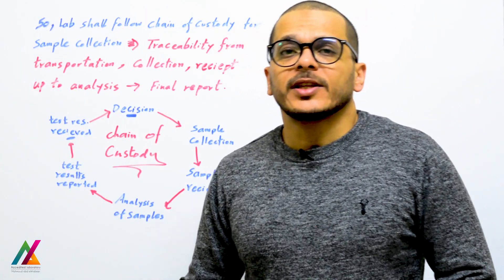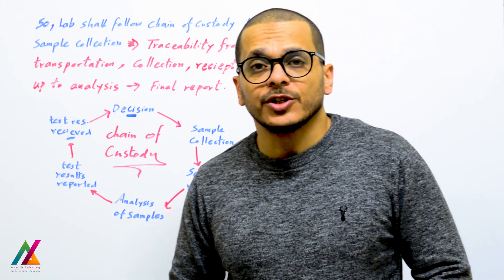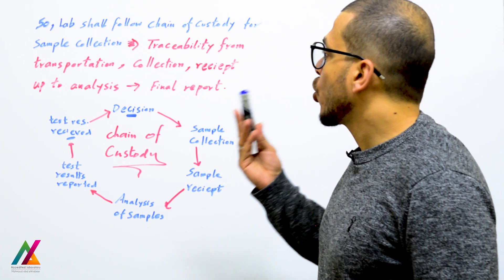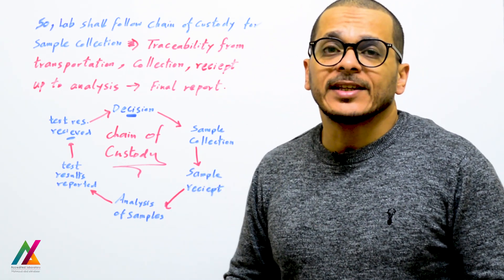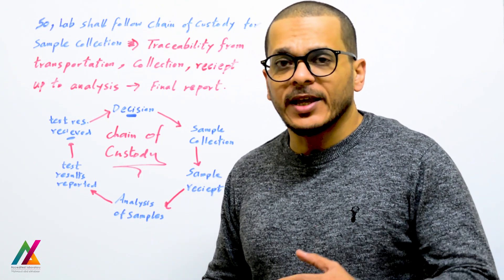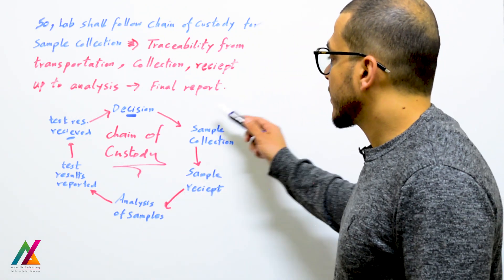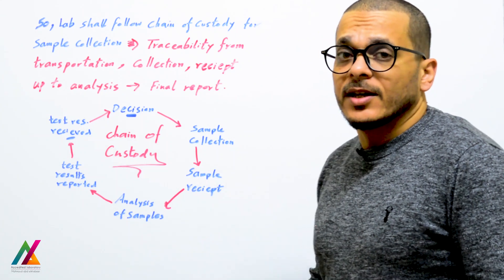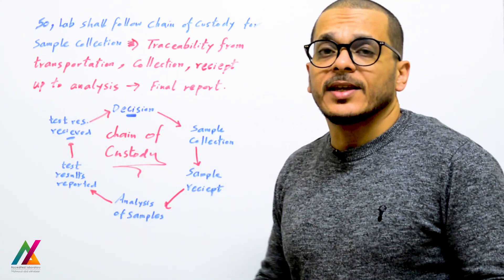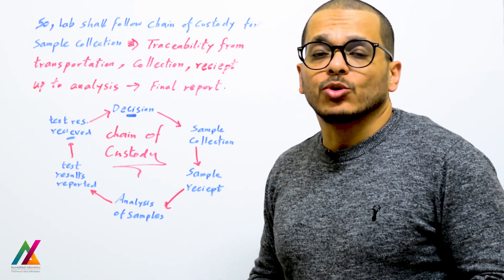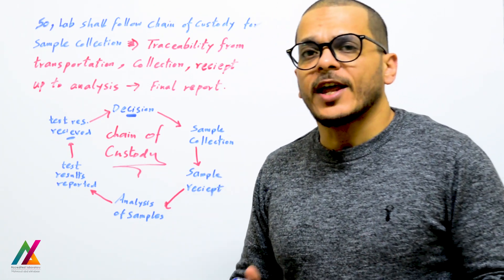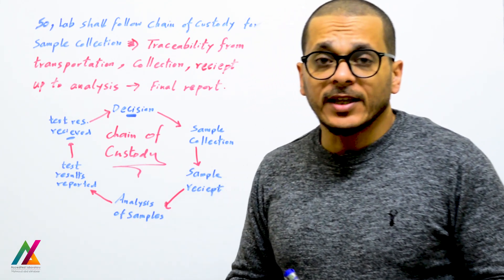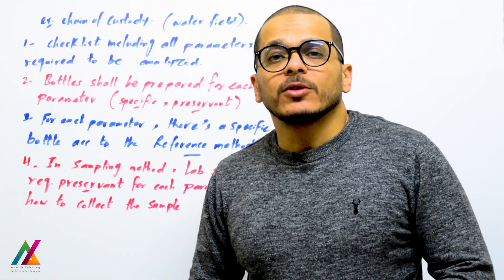In the case of sample collection, the lab shall follow chain of custody as explained in the previous lecture on sampling (clause 7.3). Chain of custody means traceability of the sample from collection and transportation through receipt, analysis, and the final report — to keep the integrity of the sample and the integrity of the results. This supports decision makers who use the reported results to accept or reject a sample.